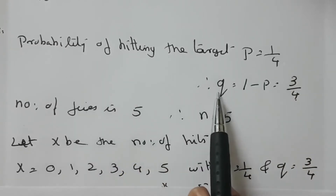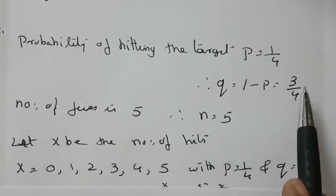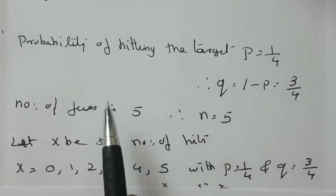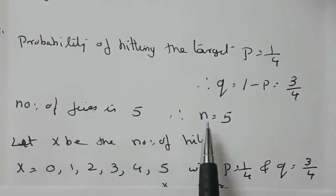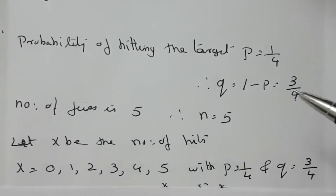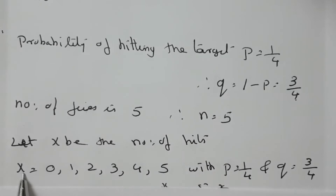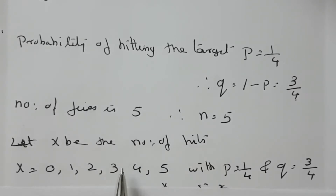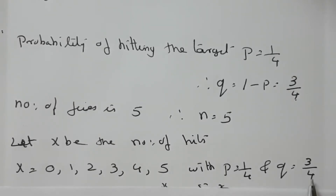The probability of not hitting the target is 3/4. The number of fires is 5, that is n = 5. We have only two outcomes: either hitting the target or not hitting the target, with predefined probability and a number of trials. Let x be the number of hits. x can vary from 0 to 5. p (probability of hitting) = 1/4, and q (probability of not hitting) = 3/4.